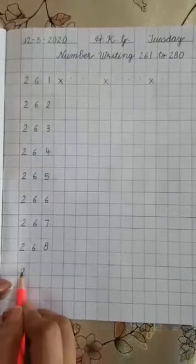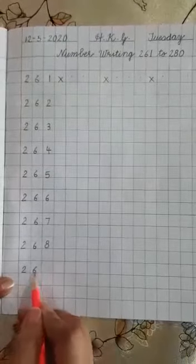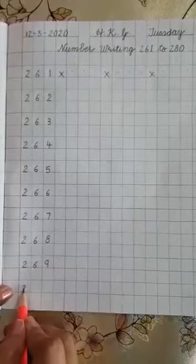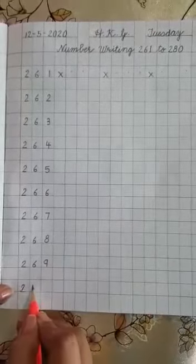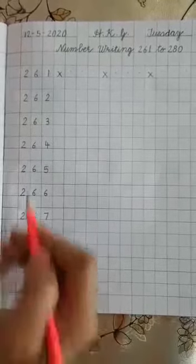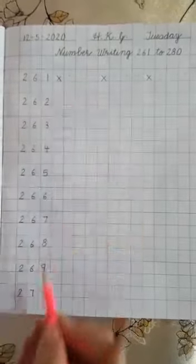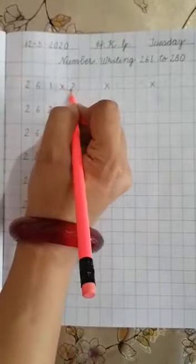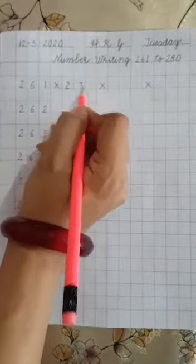Then 269. And after 269, write 270. Put one cross here. After 270, write 271.